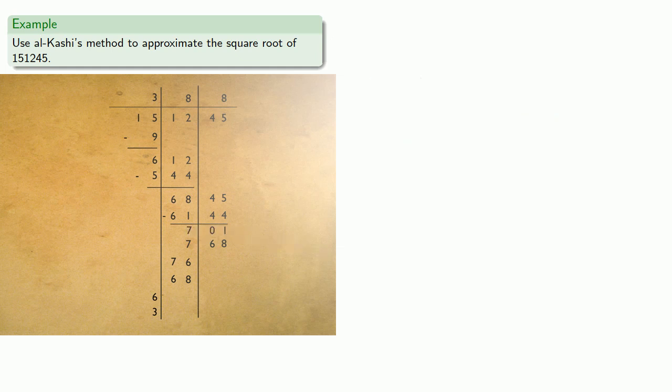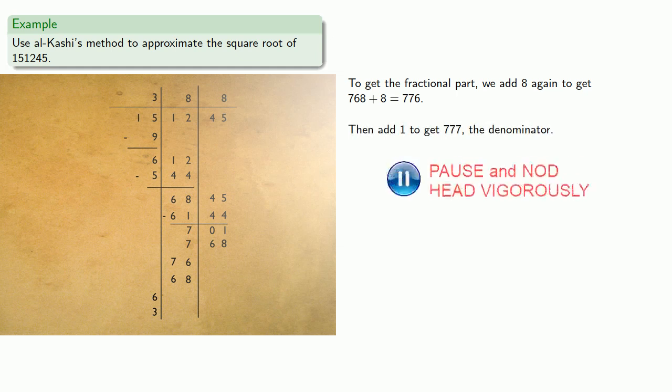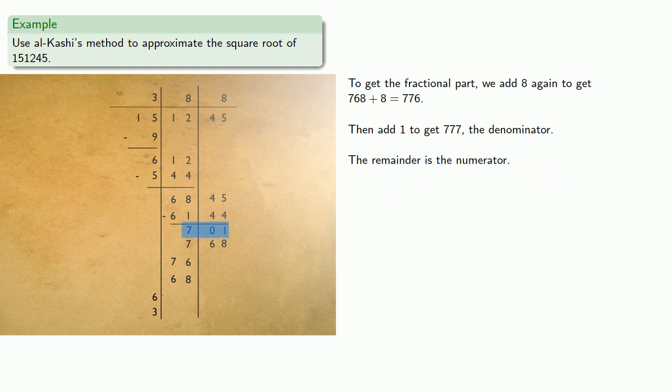Now to get the fractional part, we add 8 again, then add 1 to get 777, the denominator. The remainder is the numerator. So the square root of 151,245 is approximately 388 and 701/777.